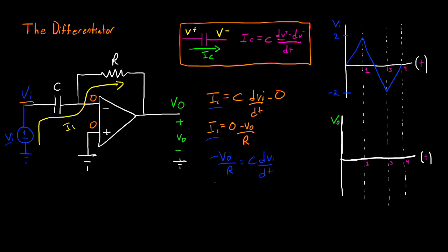And rearranging this, we get that Vo is equal to negative RC dVi dt. So the output voltage is going to be the negative of the capacitance times the resistance, multiplied by the derivative of our input voltage.